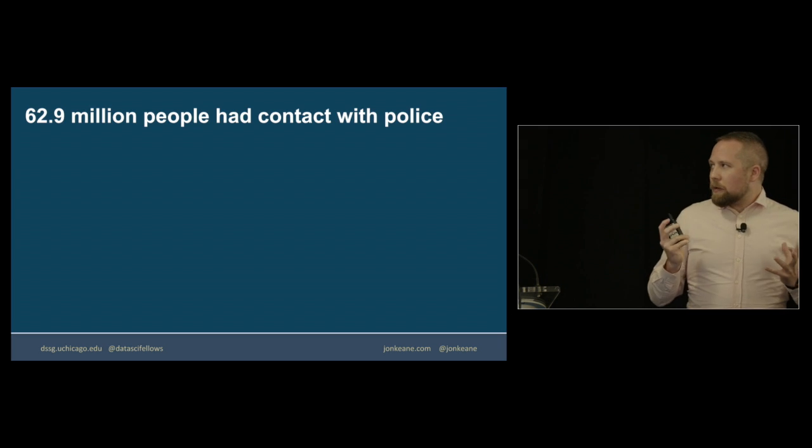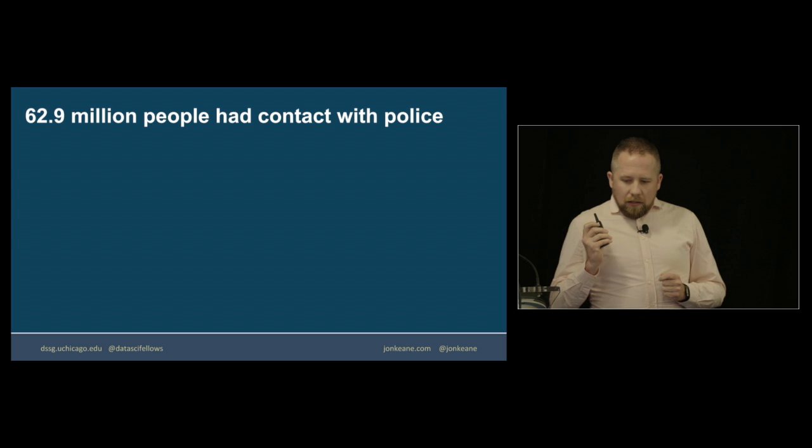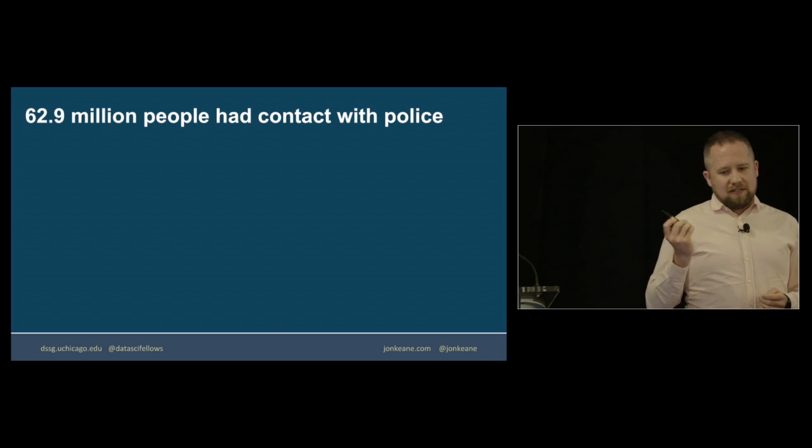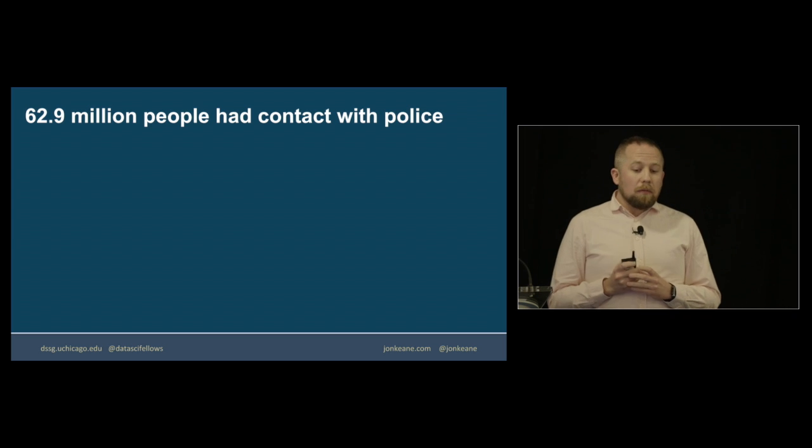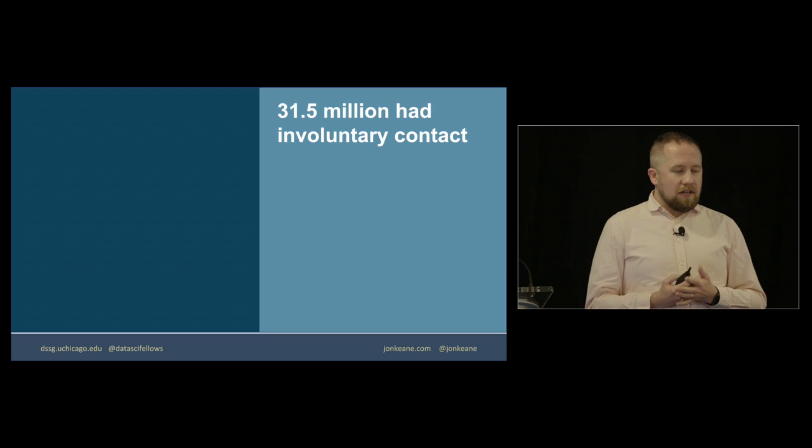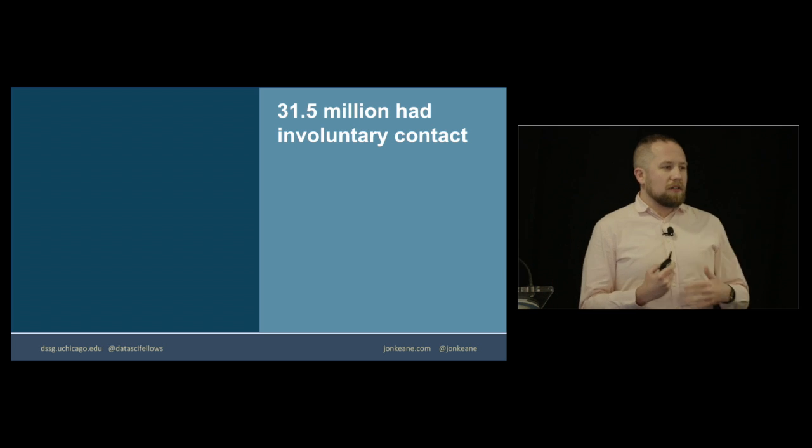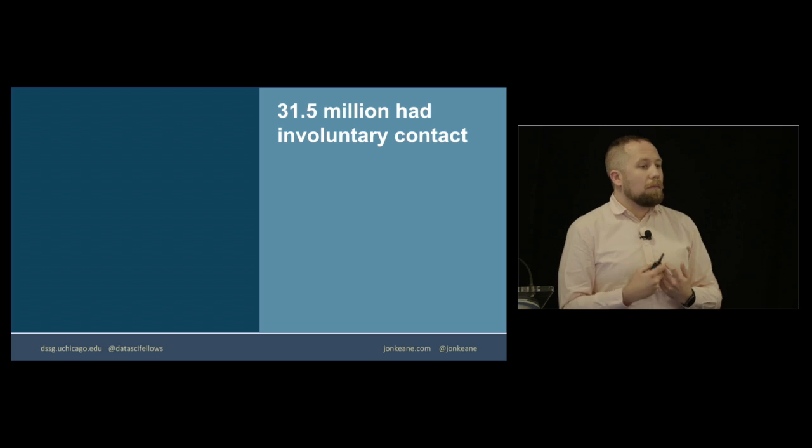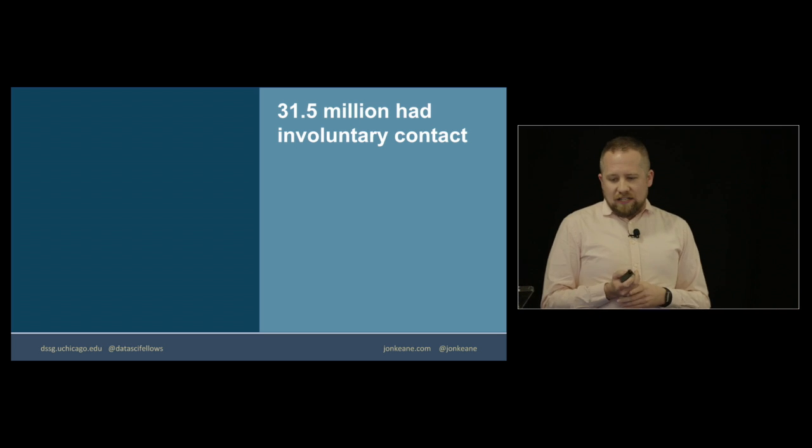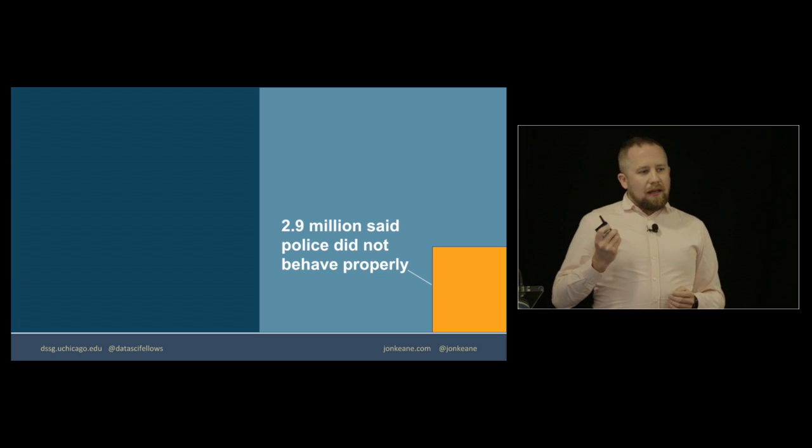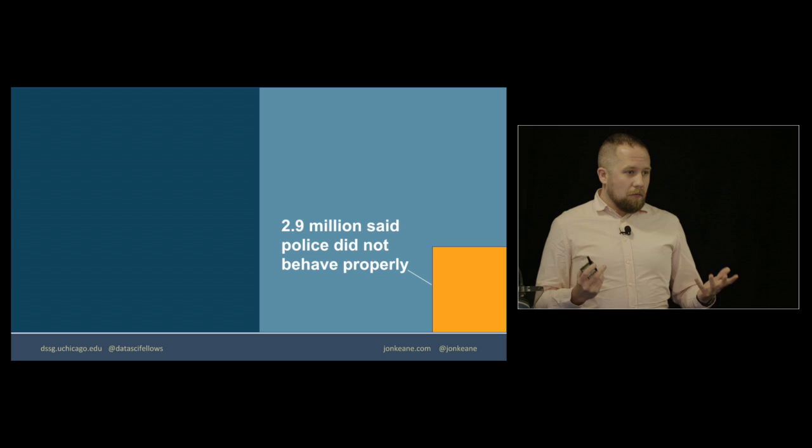So let's put some numbers on it. In 2011, and these are statistics from the Bureau of Justice Statistics, about 63 million people had contact with the police. Around half of these were involuntary contacts. They weren't situations where someone called the police and said, I want you to come out and do something for me, but rather police approached somebody, and they had that contact.